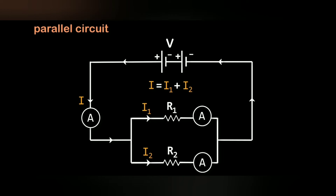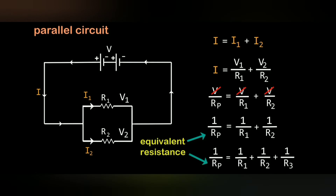The total current I is equal to I1 plus I2. In the circuit, potential difference remains constant. Applying the values of I, I1, and I2 in the equation, and since I is equal to V by R, we get V by Rp equal to V by R1 plus V by R2.